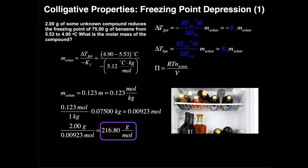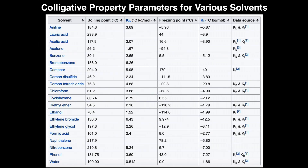We'll use the formula ΔT = −Kf × m. The Kf value is for the solvent — we look it up in a table. For benzene, the freezing point depression constant Kf is −5.12 degrees Celsius·kg/mol. In the way the formula is set up, we can use the positive value of 5.12 degrees Celsius·kg/mol.